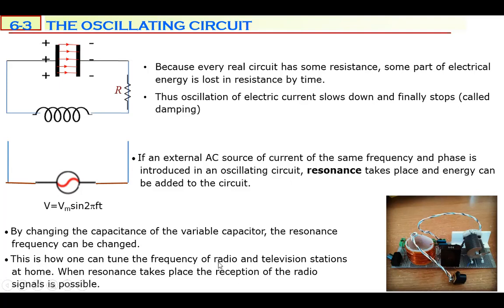This is how one tunes the frequency of radio and television stations. When resonance takes place, reception of radio signals is possible. In old-fashioned radios, there was a knob you rotated — you were changing the capacitance of a variable capacitor. The variable capacitor and a coil form the oscillating circuit, and by rotating the knob you change the frequency to match a radio station, such as 105 MHz.